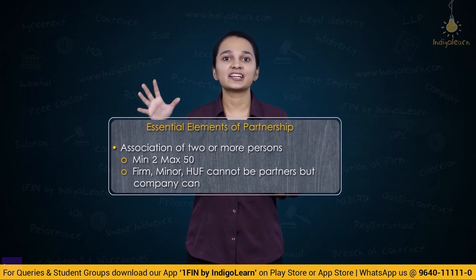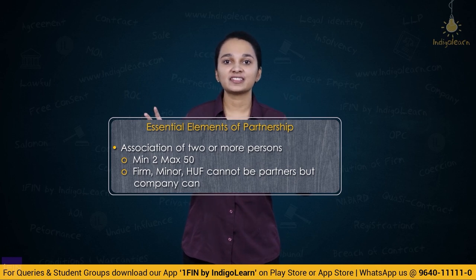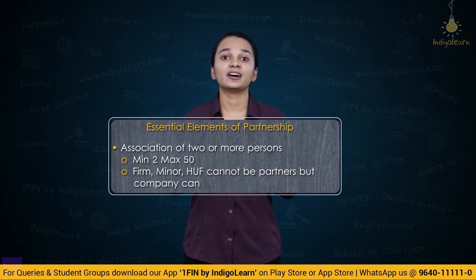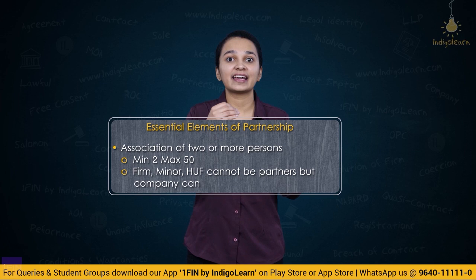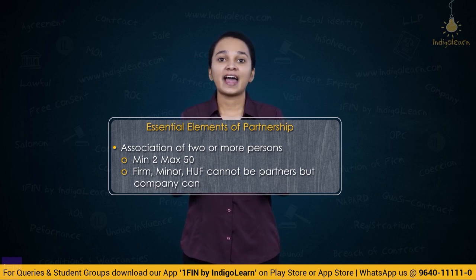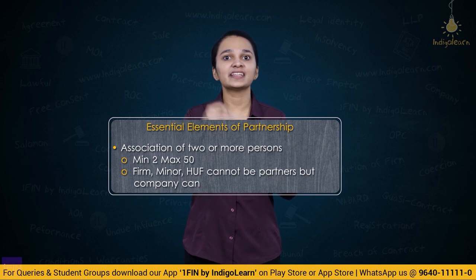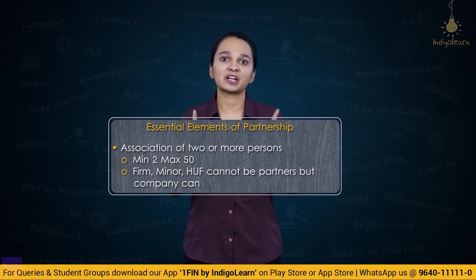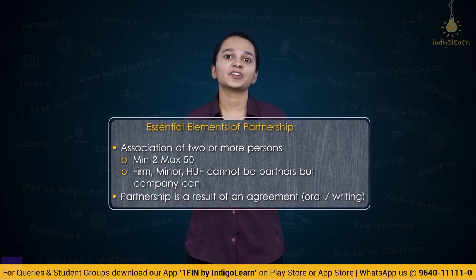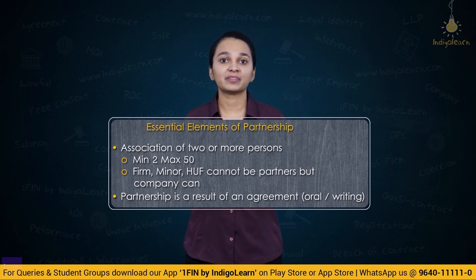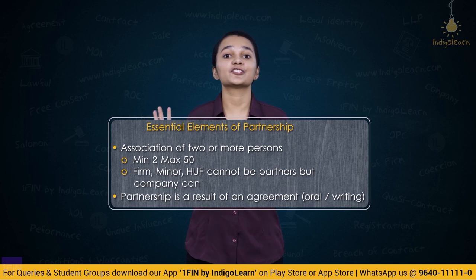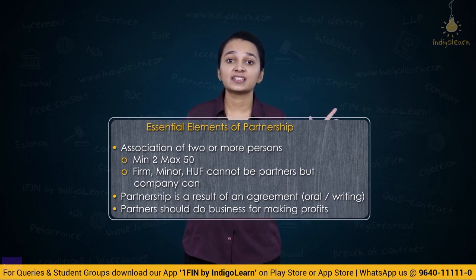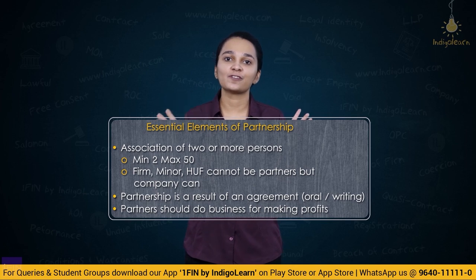The first essential element is that it has to be an association of two or more persons. The minimum number of partners is 2 and maximum is 50. It has to be a person recognized in the eyes of law. A company can become a partner but a firm cannot become a partner in another partnership firm. There also has to be an agreement — it can be oral or in writing, express or implied, but there must be an agreement. There also has to be existence of a business for the purpose of acquisition of profits.